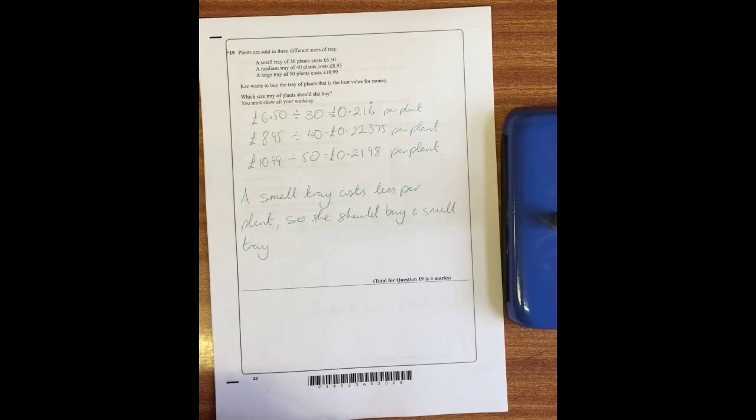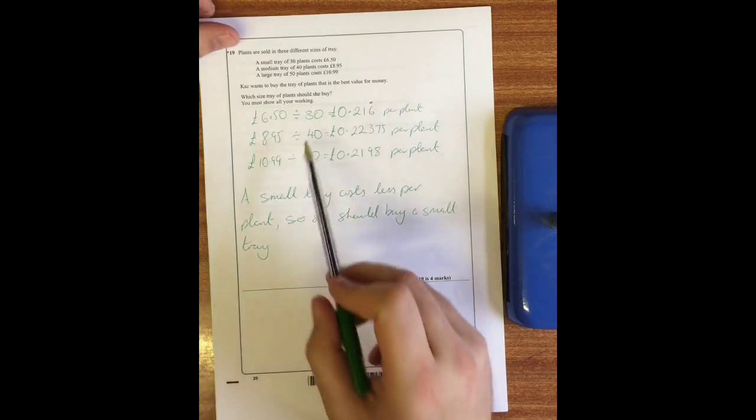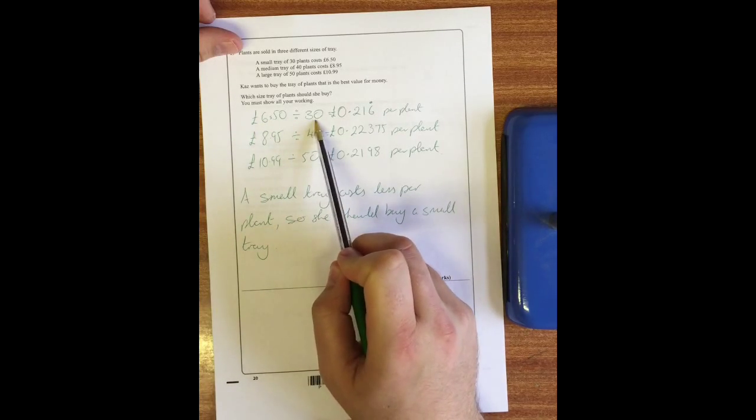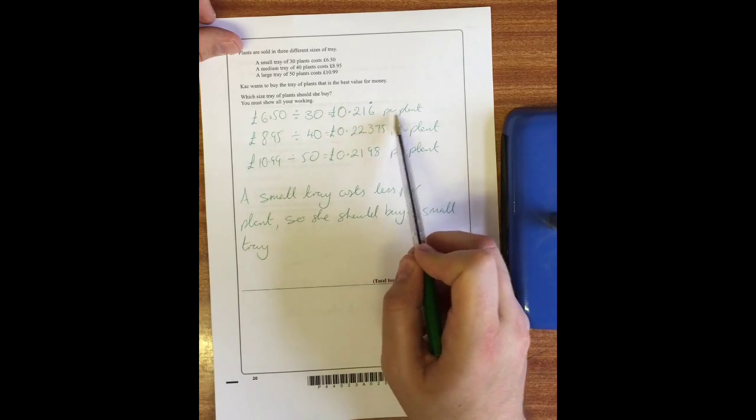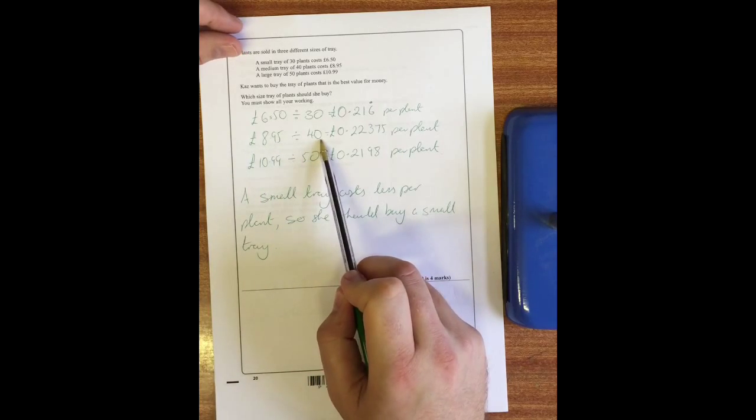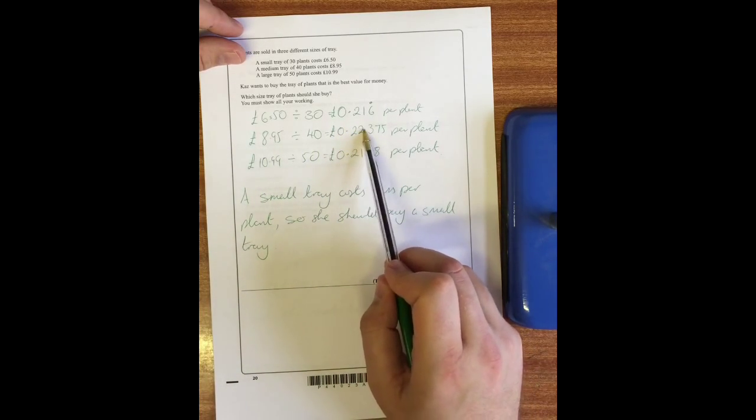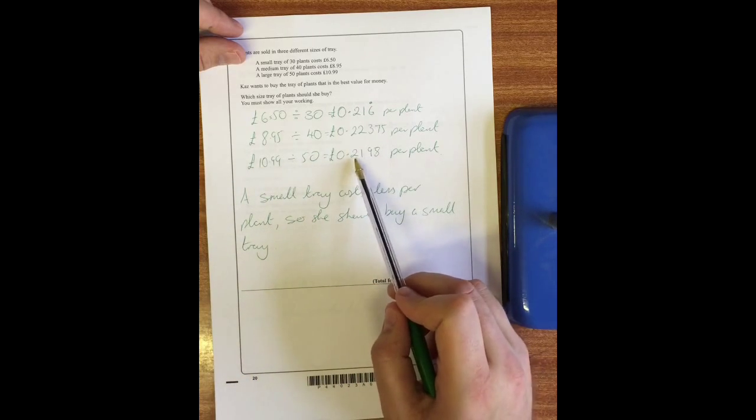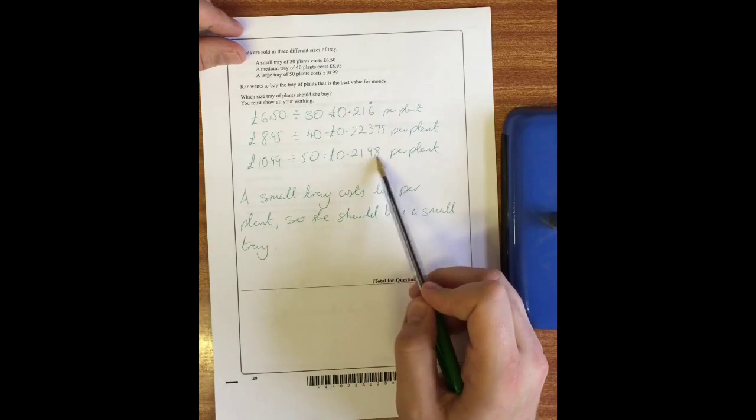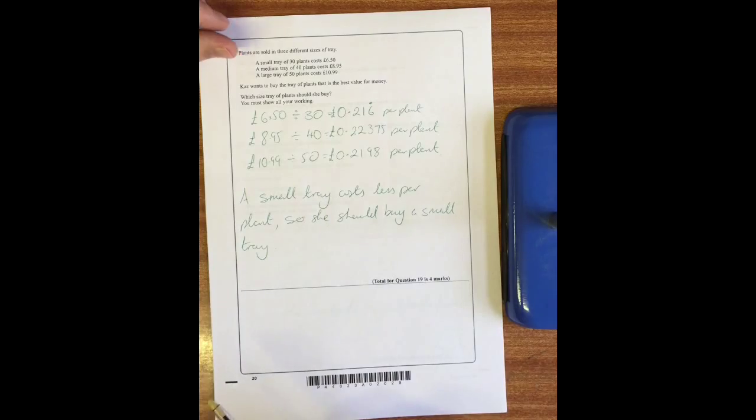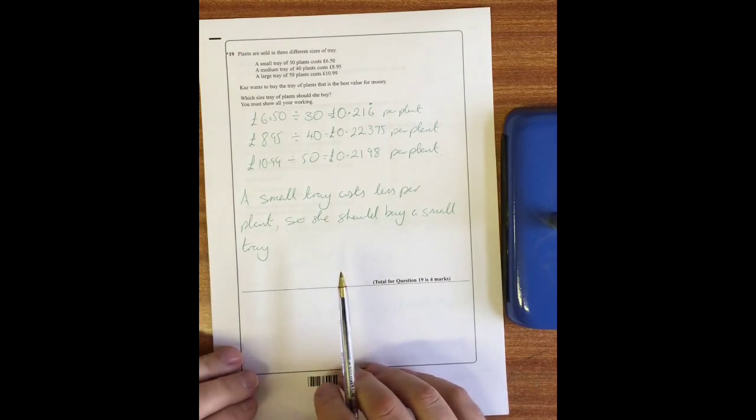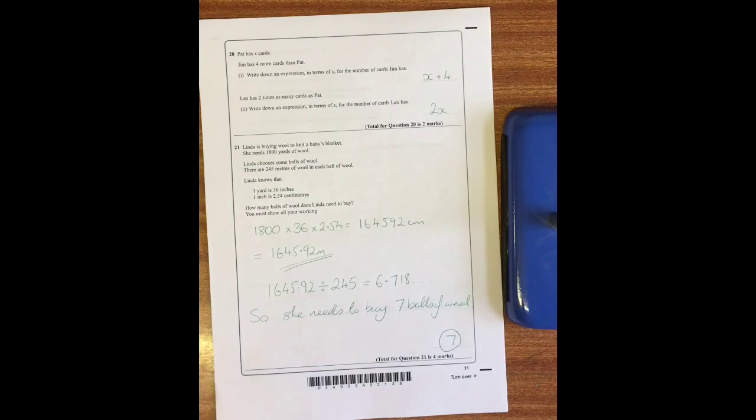Question 19: plants are sold in three different sizes of tray. A small tray of 30 plants costs six pound 50, a medium tray of 40 plants is 8.95, and a large tray of 50 plants is 10.99. Cass wants to buy a tray with the best value for money. Which tray should she buy? Well you've got to calculate here, so if I do six pound 50 divided by 30, that gives me 0.21666 - that's 21 and a bit pence per plant. Do the same for the medium tray, gives me about 22 pence per plant. And same for a large tray again, that gives me 21 pence but slightly more of a part of a pence there, because that's a nine and that's a six. So that means that the small tray must cost her less, so that's the best value for money.